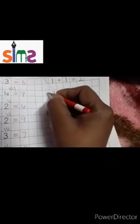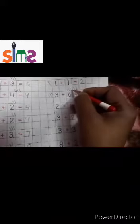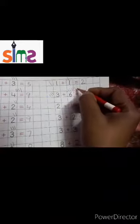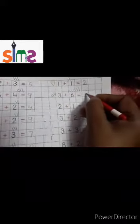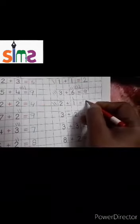Count the lines: one, two, three, four, five, six, seven, eight, nine. Three plus six is equal to nine. Two — one, two. One — one. Count: one, two, three. So two plus one is equal to three.